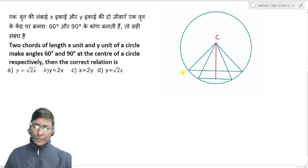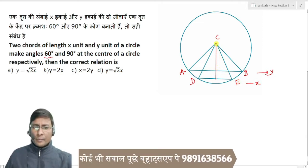You have two chords, one is AB which has length y, and the second chord is DE which has length x. There's a property that if you have a chord in a circle and draw a perpendicular from the center, then the chord will be bisected.